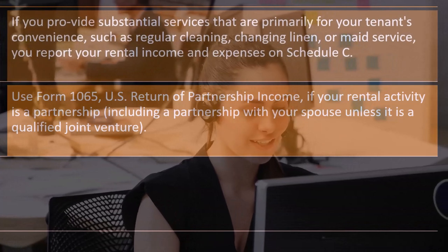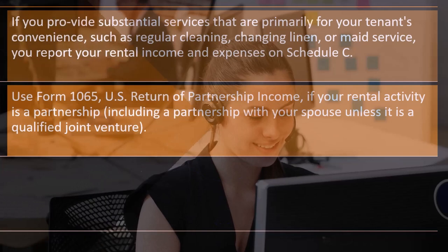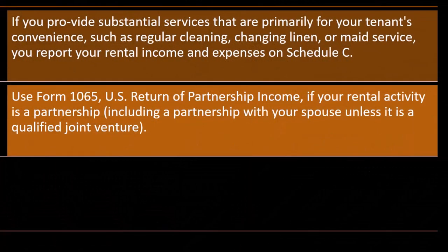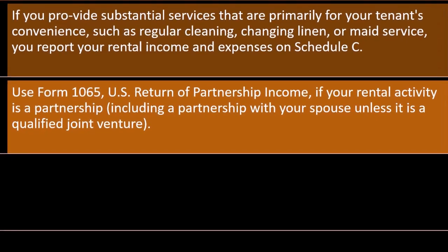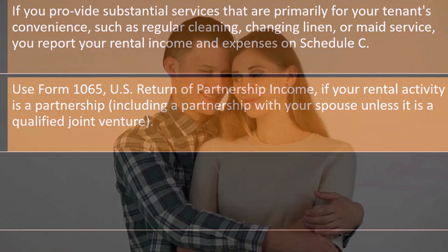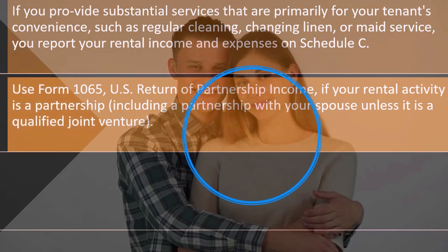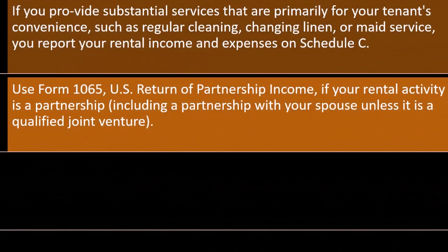Use Form 1065, U.S. Return of Partnership Income, if your rental activity is a partnership, including a partnership with your spouse, unless it is a qualified joint venture. The partnership situation with a spouse gets a little confusing because you might think you'd report as one entity on Schedule E, but it gets messy because two people are involved.